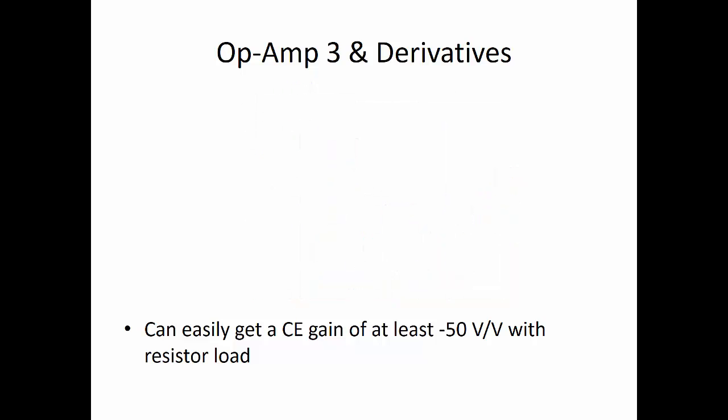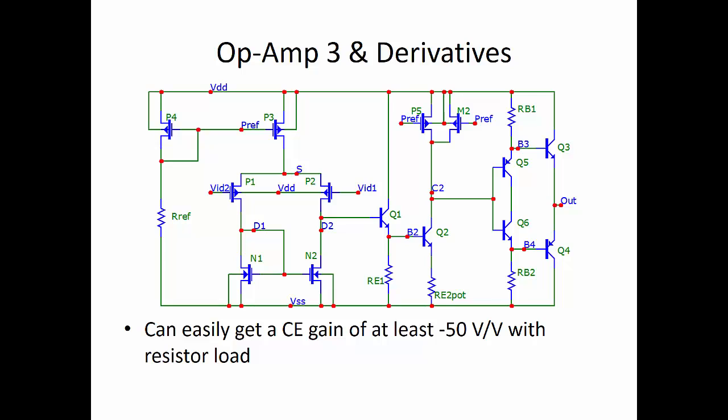It can even go to much higher gains with an active load. This is one example with an active load, where the RC has been replaced with two PMOSes connected in parallel to be active loads for Q2. This single stage could reach 200 volts per volt or larger gain, but RE2, which was required for biasing the transistor Q2, necessarily caused the gain to be reduced, but by not too much.